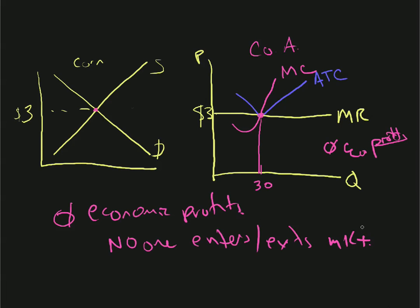We're at an equilibrium in the long run. This curve looks the same. We're thinking about the long-run approach — nothing happens here. Zero economic profits, nothing changes.